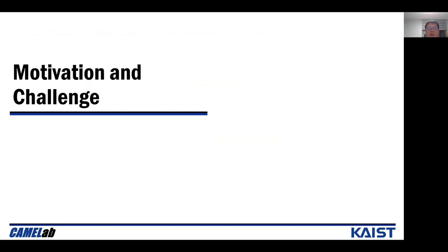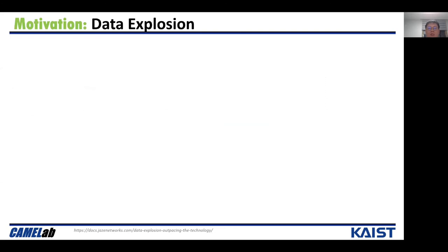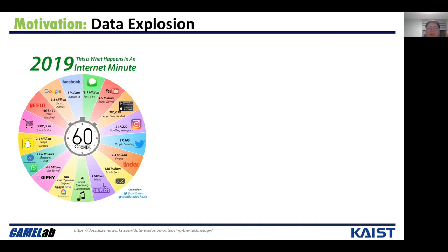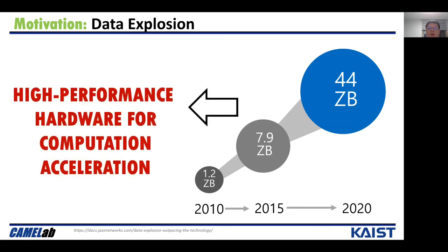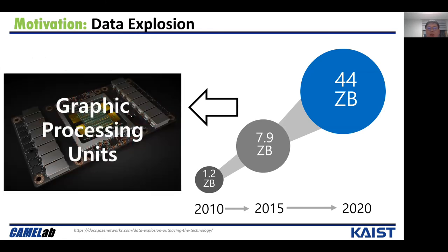I will continue the presentation with the motivation and the challenge. The data in the world is increasing at an amazing speed. In one minute, millions of messages, emails, and tweets are generated on the internet. If we sum up the data from all sources, the total amount of data has increased by 40 times since 2010. To process such large amounts of data, we need high-performance hardware for acceleration. Graphic processing units, also known as GPUs, can be a good candidate.